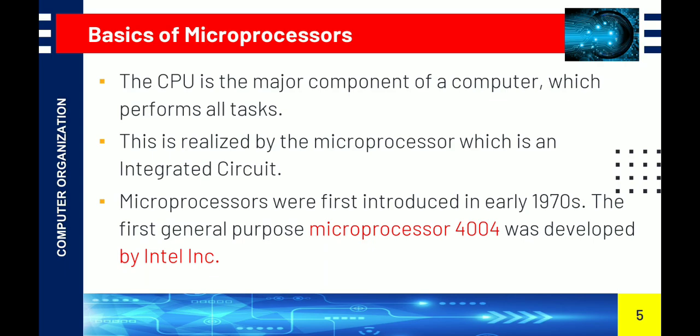The generations of computers: first generation computers used vacuum tubes, second generation used transistors, and third generation used integrated circuits. A single vacuum tube represented one bit of data. Transistors were used to reduce the size of computers. A vacuum tube is equivalent to a single transistor, and a transistor combined into an integrated circuit forms a microprocessor.